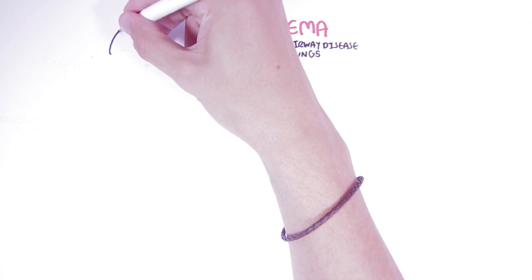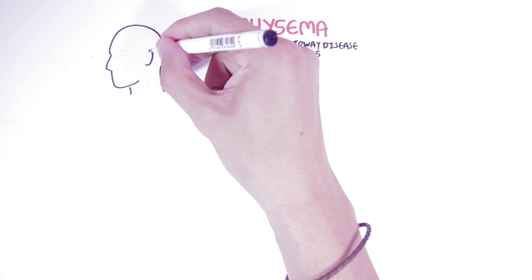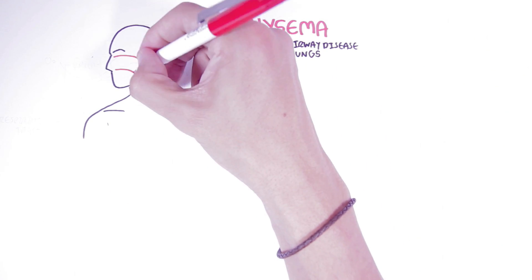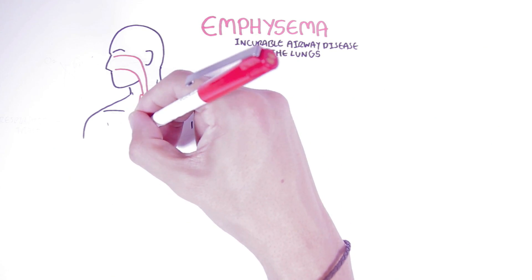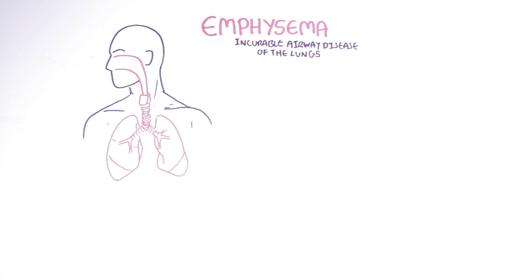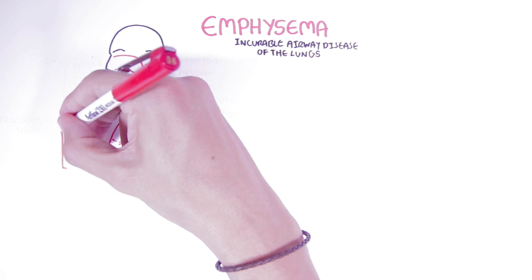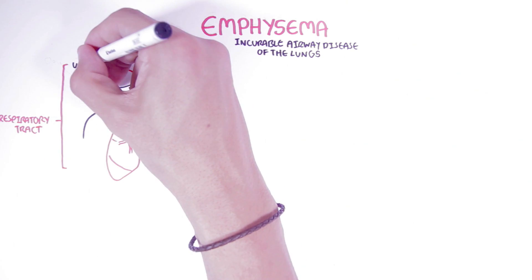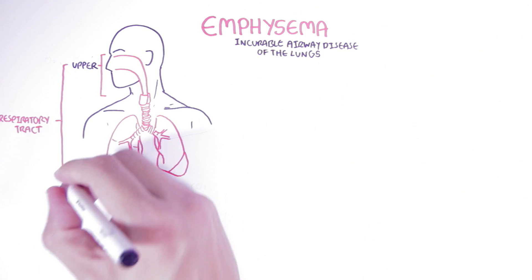To understand this disease, we must first review the respiratory system to get a better understanding of what this disease is all about. The respiratory system consists of anatomical structures involved in ventilation and gas exchange. The respiratory tract can be divided into two parts: the upper and the lower respiratory tract.